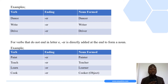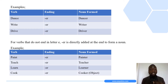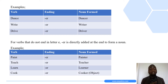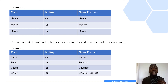We have another example — the verb 'write'. To write means to put something down on paper using ink. If we remove the last 'e' in 'write' and add '-er', the noun formed is 'writer' — somebody who writes books, articles, and many other things. Lastly, there is the verb 'drive'. If we omit the 'e' and add the ending '-er', the noun formed is 'driver'.